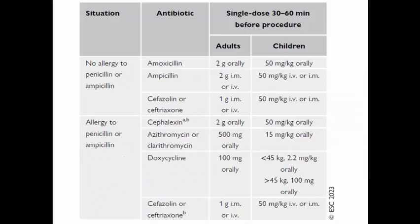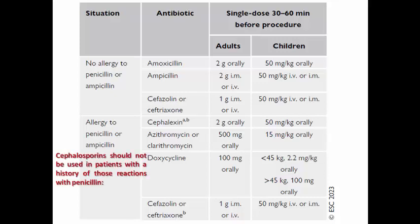This table shows the options for antibiotics to be chosen for prophylaxis. If the patient has no allergy to penicillin, we can choose amoxicillin, ampicillin, or ceftriaxone — given as a single dose 30 minutes before the procedure if parenteral, or 60 minutes before if oral. If the patient has a penicillin allergy — and note that cephalosporins should not be used in patients with a history of allergic reactions to penicillin such as anaphylaxis, angioedema, or urticarial rash — all beta-lactams should be avoided, and alternative antibiotic options are available.